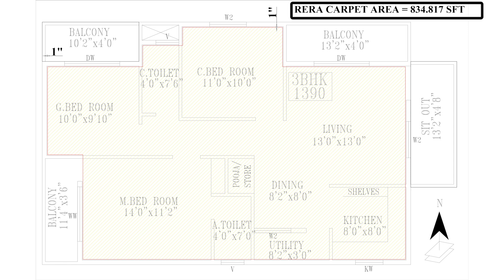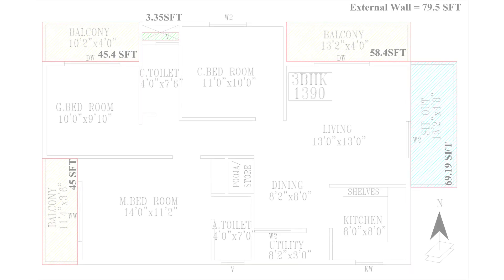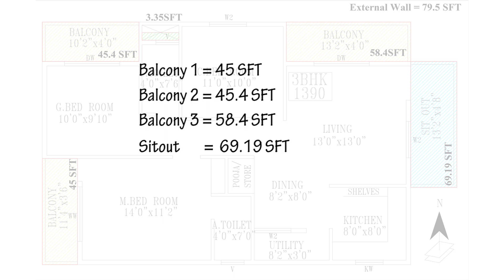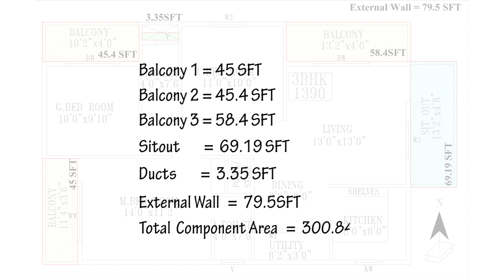Calculating the area of the yellow region, the carpet area is found to be 834.817 square feet. We have not yet included many components of the flat such as balconies, sit-outs, etc. We will now calculate the total area of those individual components as seen on the screen.